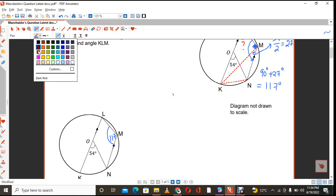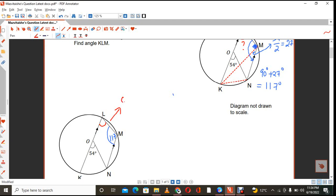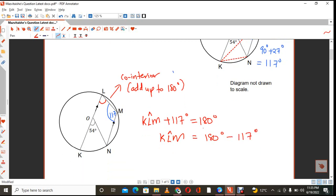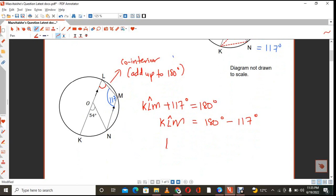So, in order for me to find this missing one here now, I now see that these angles, they are co-interior. And what can you tell me about co-interior angles? They add up to 180 degrees. So, what does it mean? It means then that angle KLM plus 117 degrees should equal to 180. So, angle KLM will therefore be 180 degrees, take away 117. Therefore, our angle that we are requiring here, angle KLM would be 63 degrees.